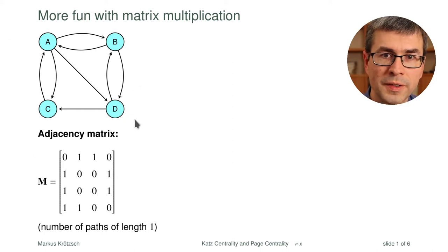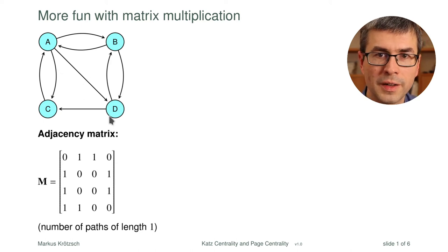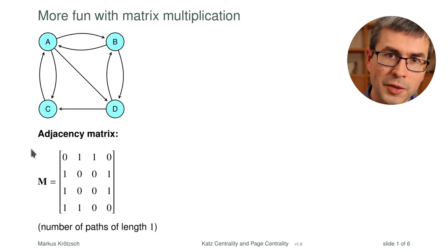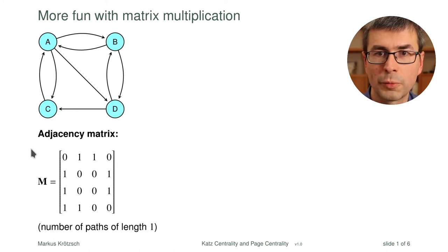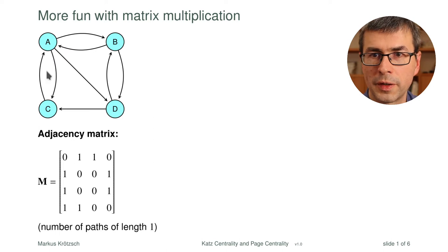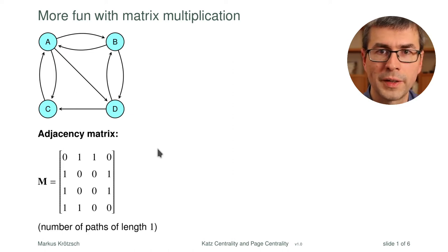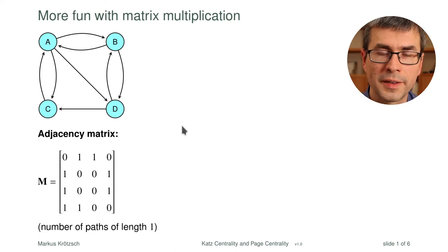What you see here is the same graph I used last time with four nodes and directed edges between them. This time I use a pure adjacency matrix — not a stochastic matrix representing probabilities of moving somewhere, just a matrix representing the graph structure. We have a one if there is an edge and a zero if not. Reading column by column: from A you can go to B, C, and D; from B you can go to A and D, and so on.